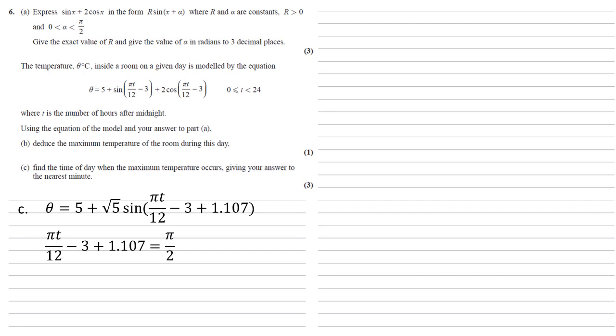Adding the 3 and subtracting the 1.107 gives us that pi t over 12 equals pi over 2 plus 1.893. We're then going to multiply by 12 and divide both sides by pi to get 12 lots of pi over 2 plus 1.893 all over pi, which if we stick into a calculator gives us an answer of 13.23.